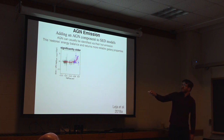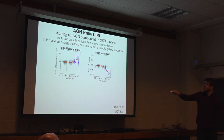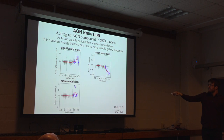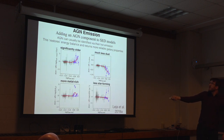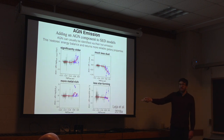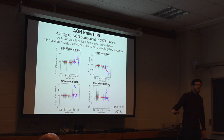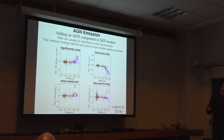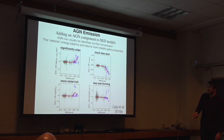For galaxies with significant AGN, you measure very different ages, dust properties, metal properties, and star formation rate properties when you add in this AGN model. That sort of restores the energy balance we once had and allows us to measure accurate properties again.